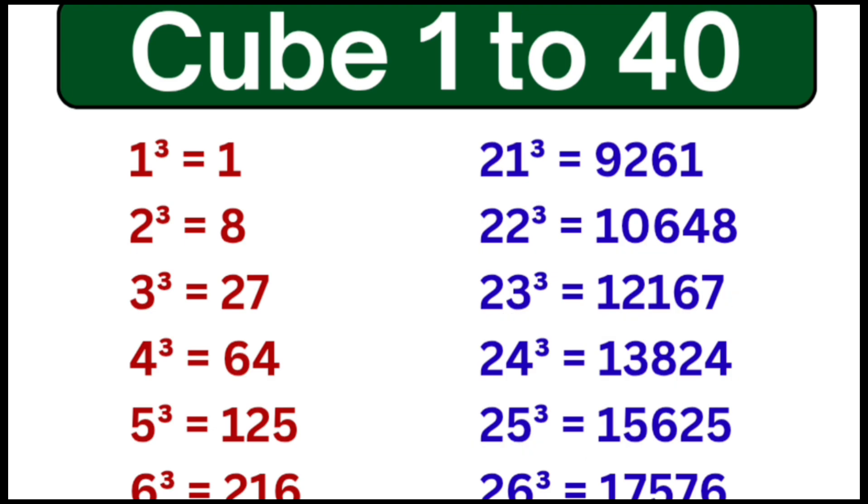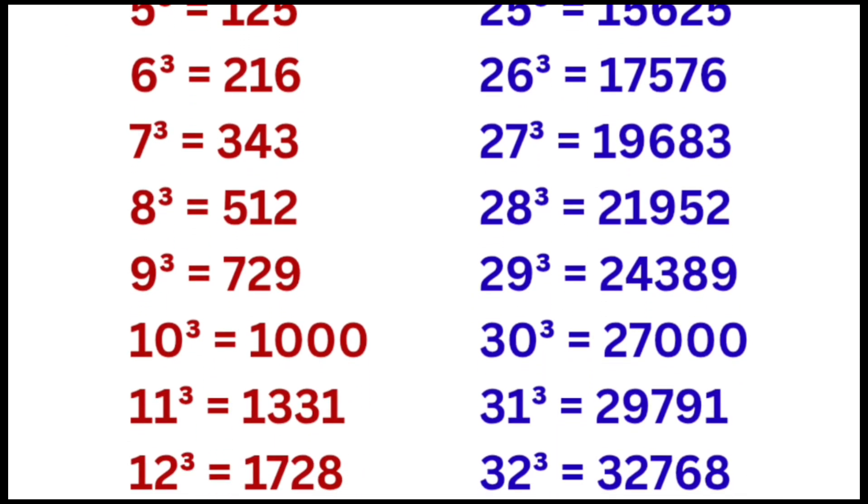Cube of 26 is equal to 17576, cube of 27 is equal to 19683, cube of 28 is equal to 21952, cube of 29 is equal to 24389, cube of 30 is equal to 27000.